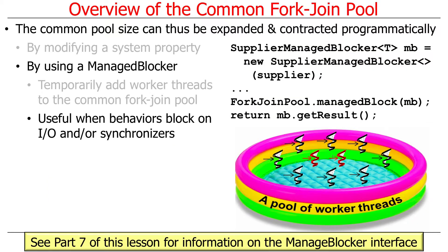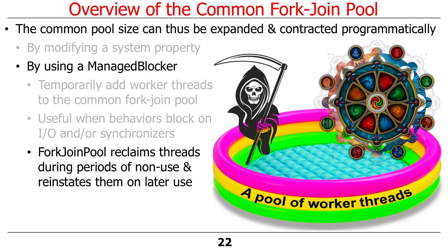The next part of this lesson will show an example, though we probably won't have time to cover that today. The fork-join pool will also reclaim threads during periods of non-use. If you go through a bursty period where lots of threads are allocated, it'll increase the size of the pool, but after those threads are no longer used, it'll automatically shrink back to the default size — typically the number of cores on the machine. It will reap them and can reinstate them later in a sort of reincarnation-like model as needed.